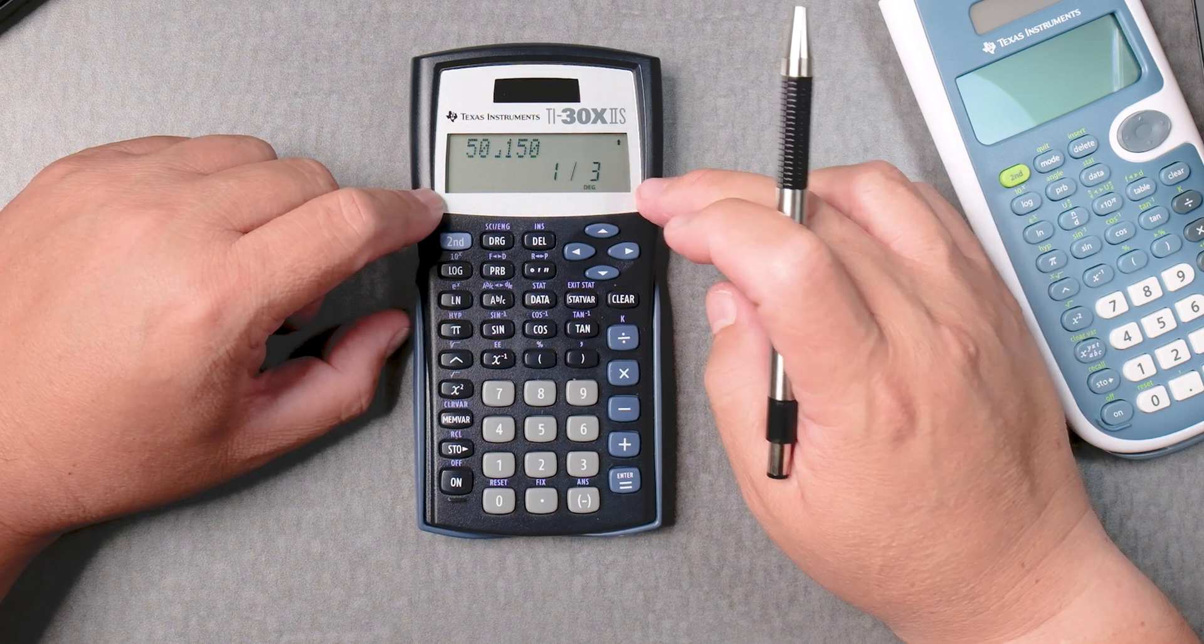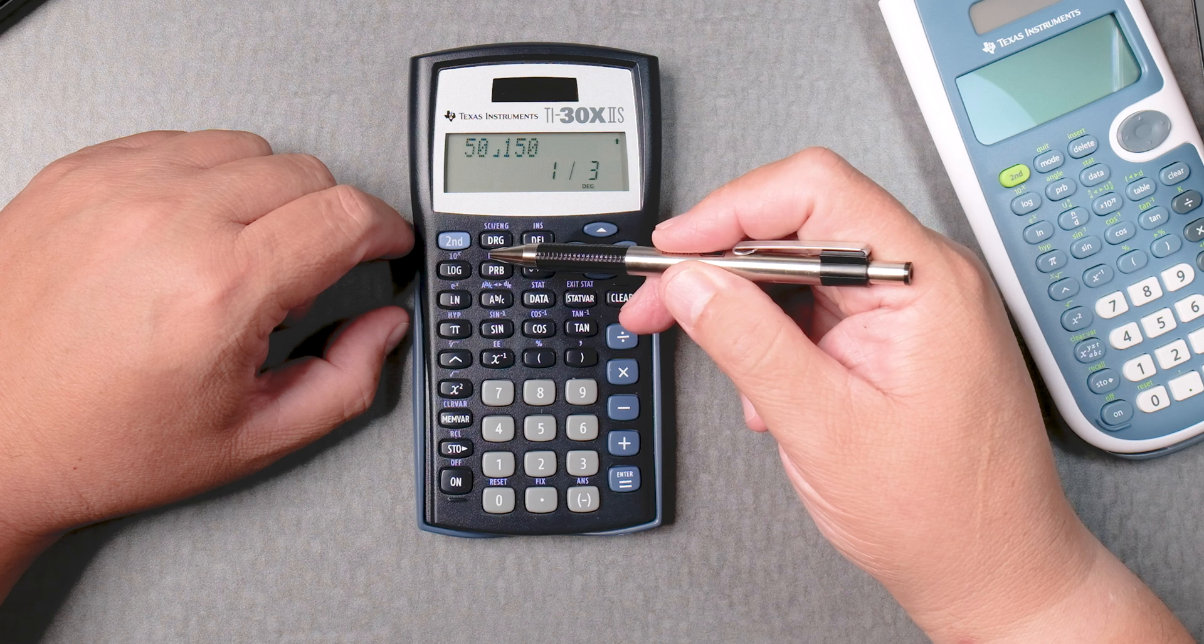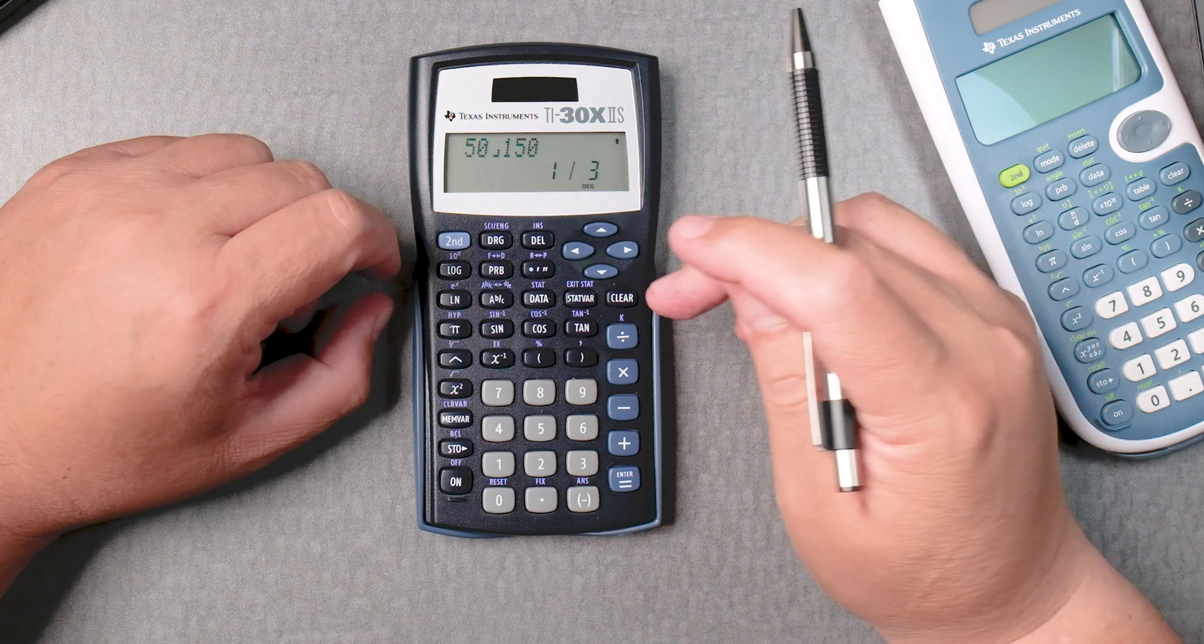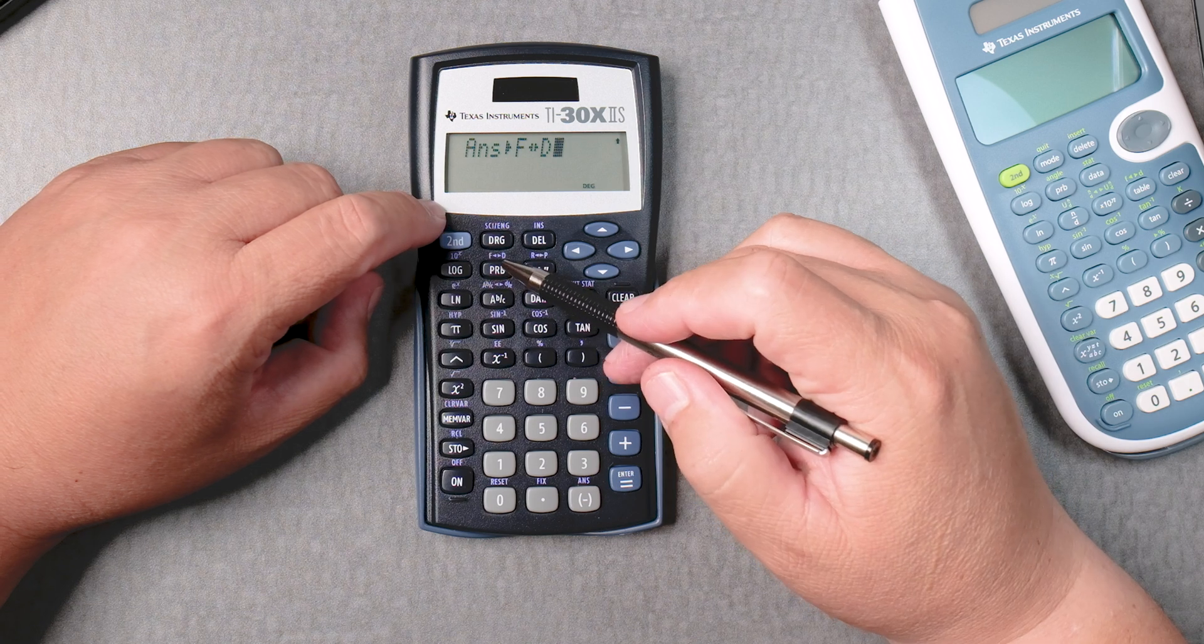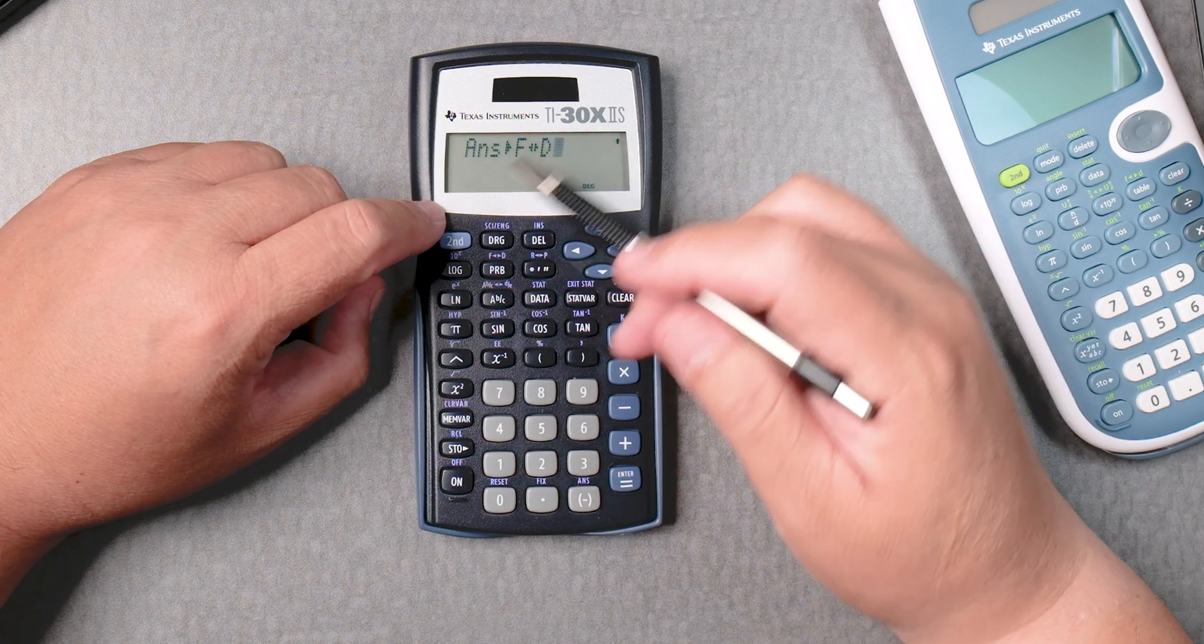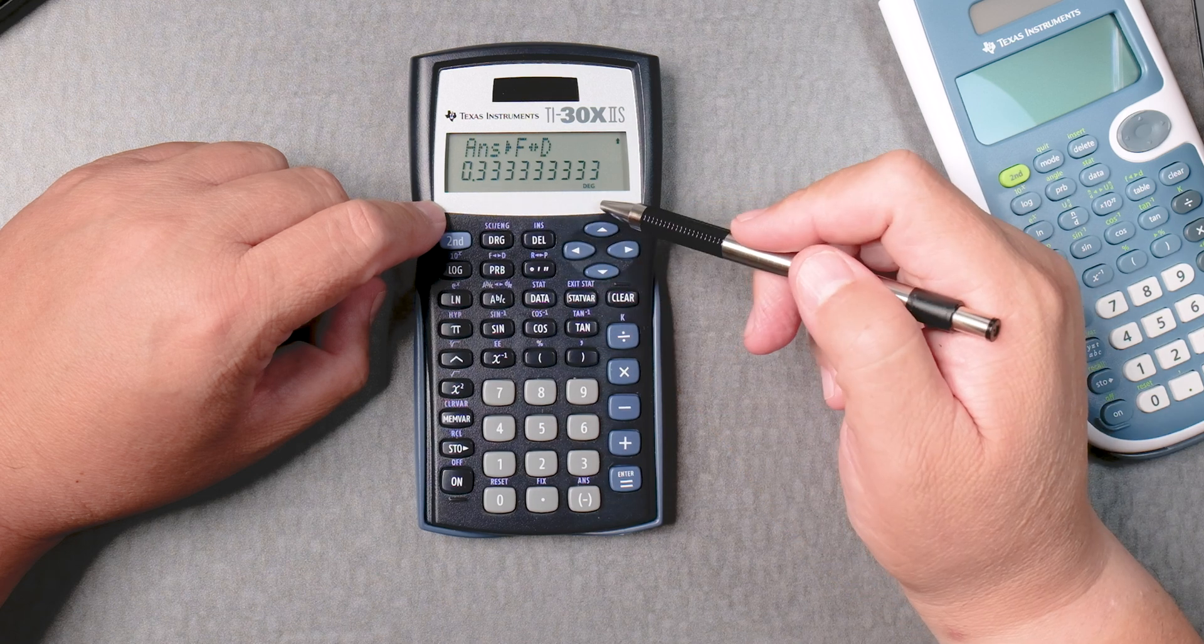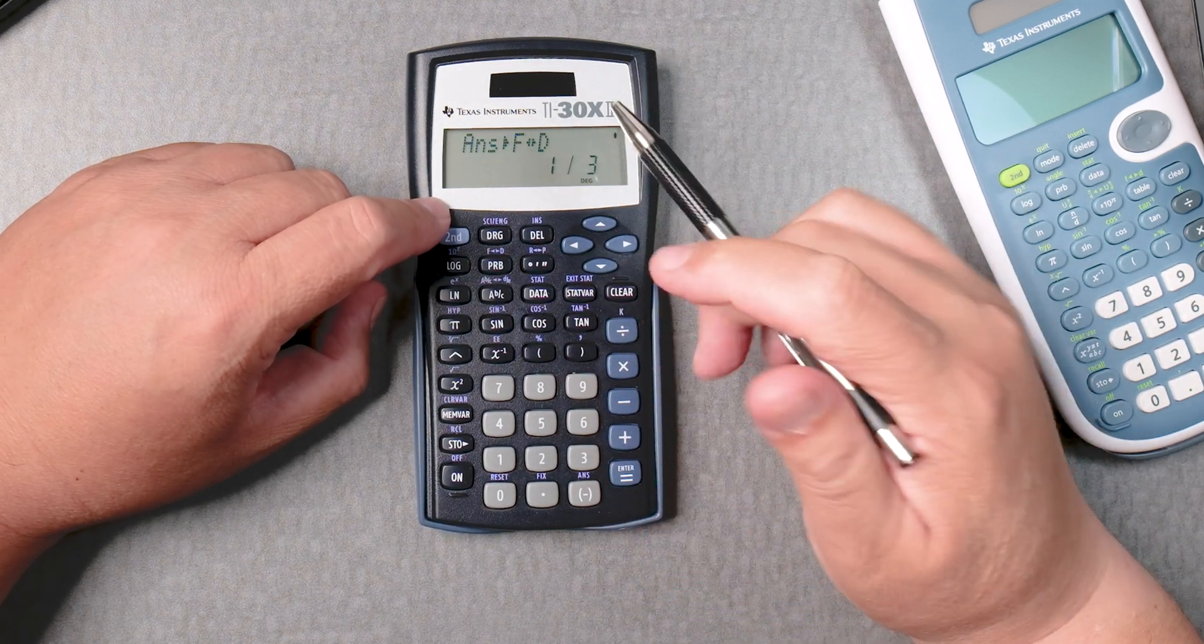You want a decimal answer of this. Right here it goes fraction to decimal. So you go second, PRB. The last answer, change it from fraction to decimal, decimal to fraction, and it changes it to a decimal and you can go back if you like to a fraction.